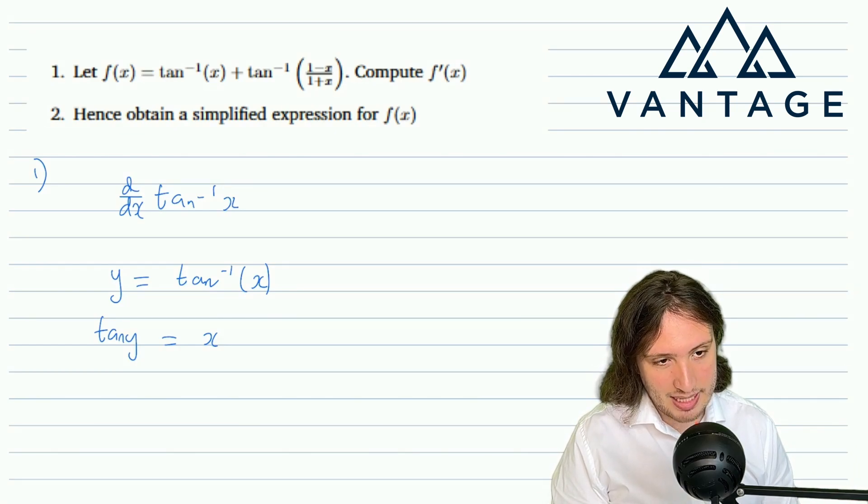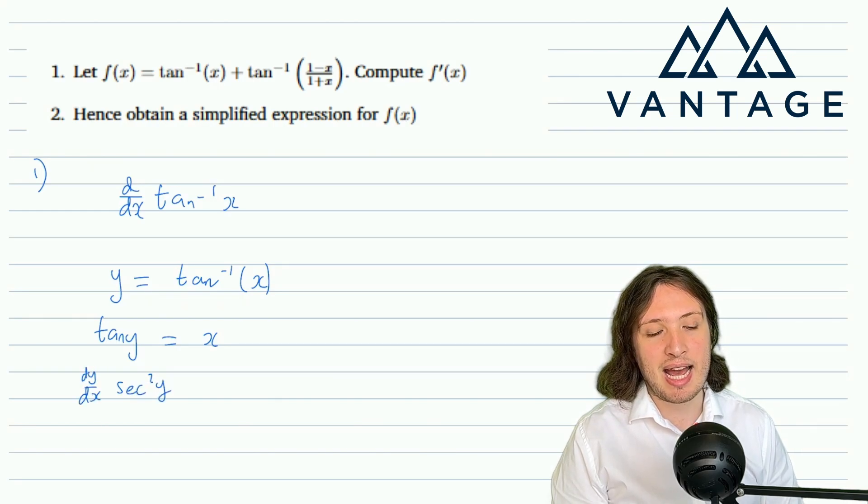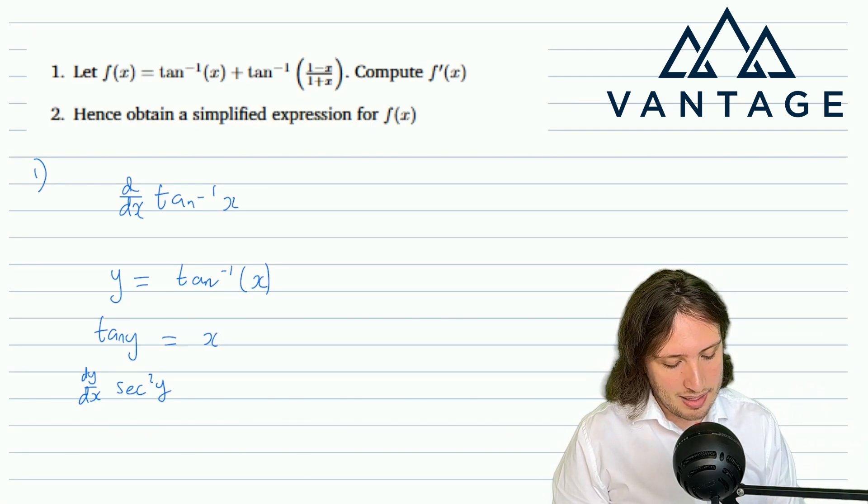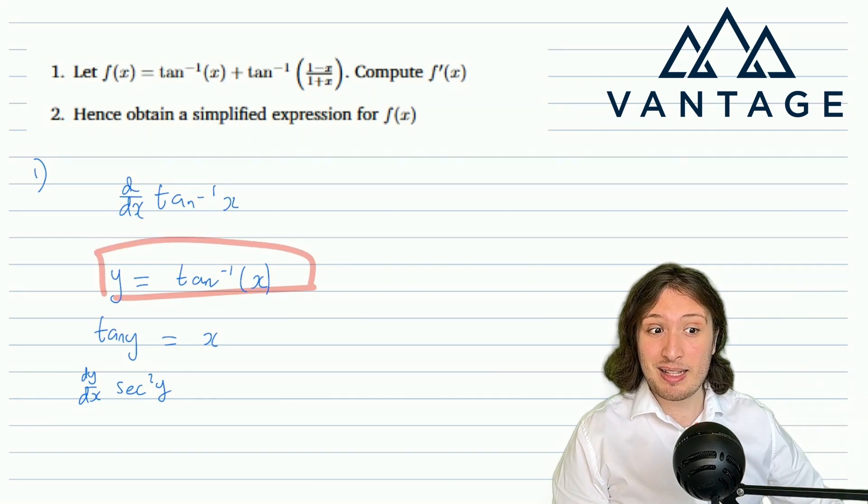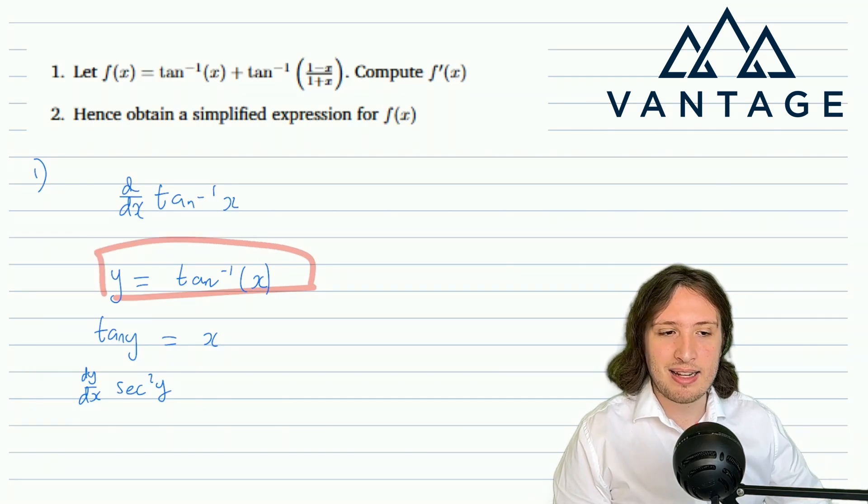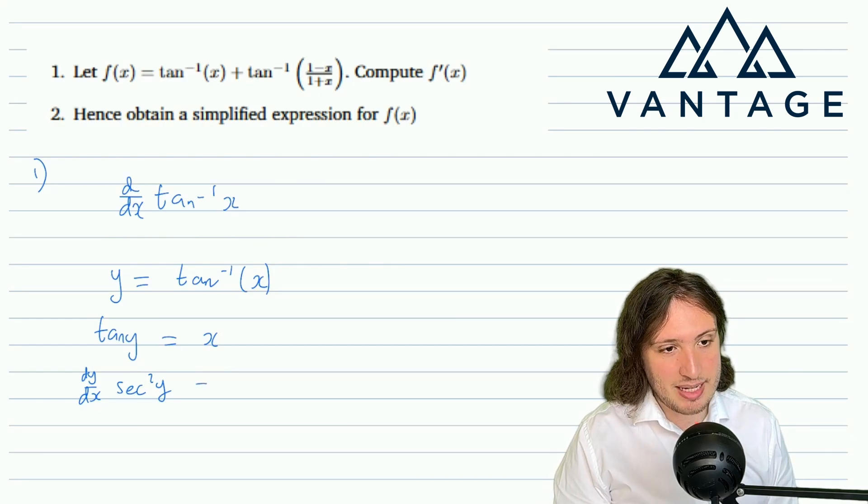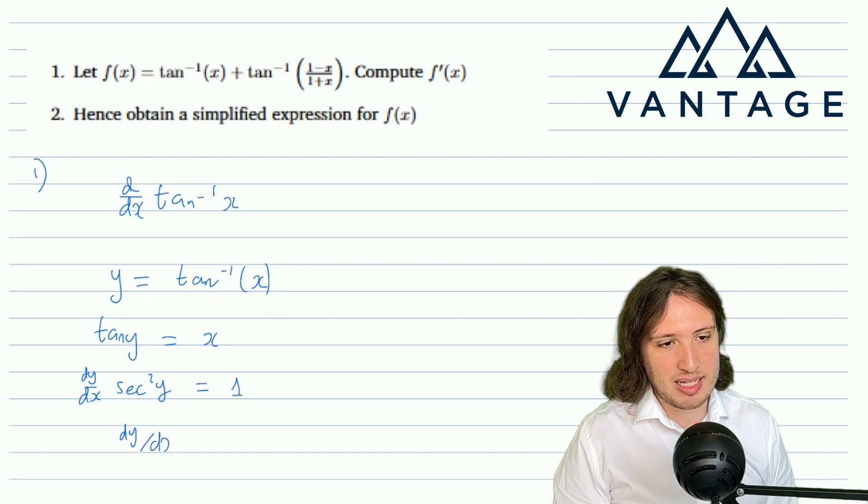And now I can differentiate with respect to x. So on the left hand side the derivative of tan is something we do know, it's sec²(y), but by the chain rule I pick up a factor of dy/dx because it's really a y not an x inside that tan. Now crucially, dy/dx is precisely the derivative of arctan because y is arctan.